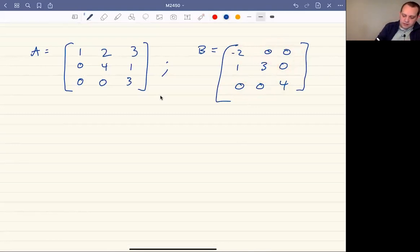It turns out that if you want to find the determinant of a triangular matrix, you just take the product of the terms on the diagonal. So det(A) would be 12. Det(B) would be -2 times 3 times 4, so -24.